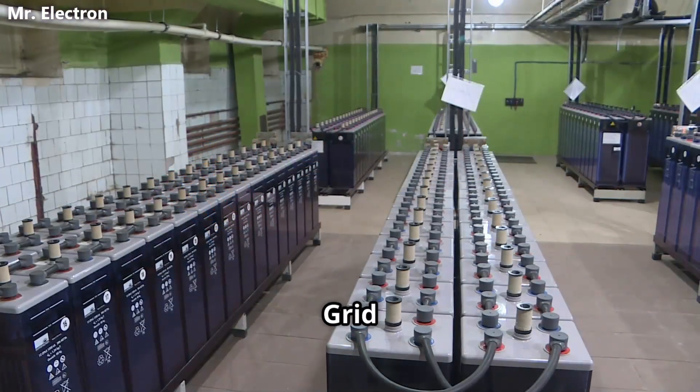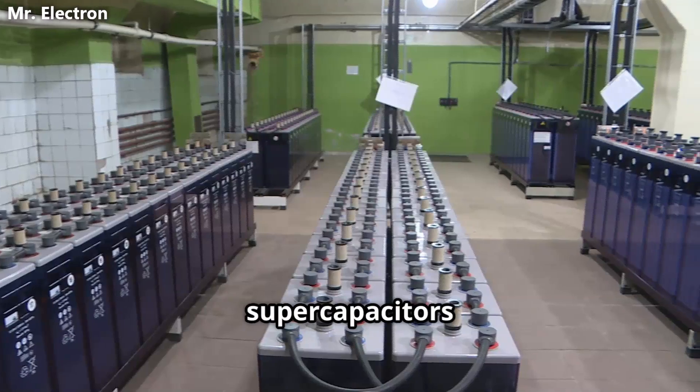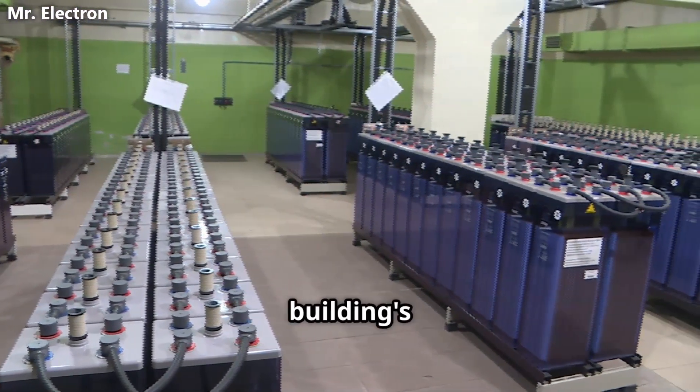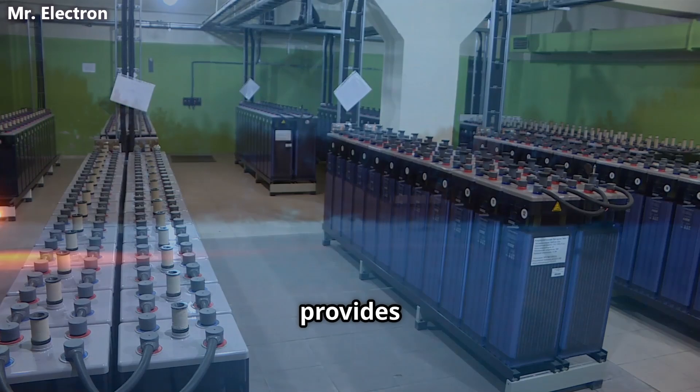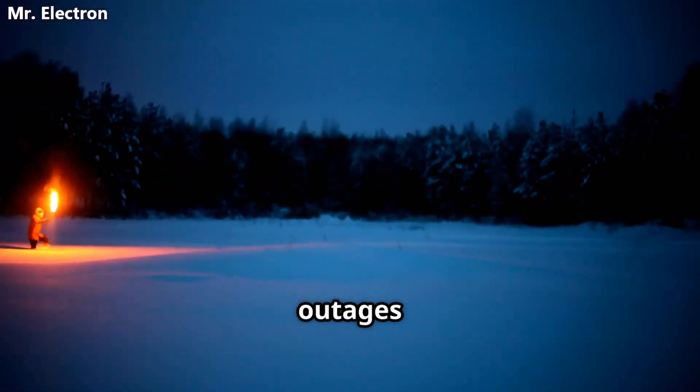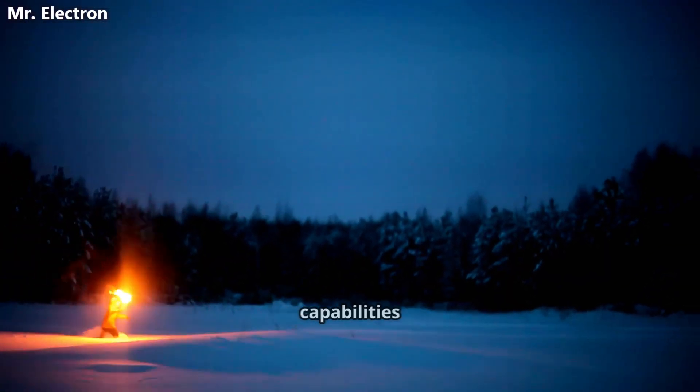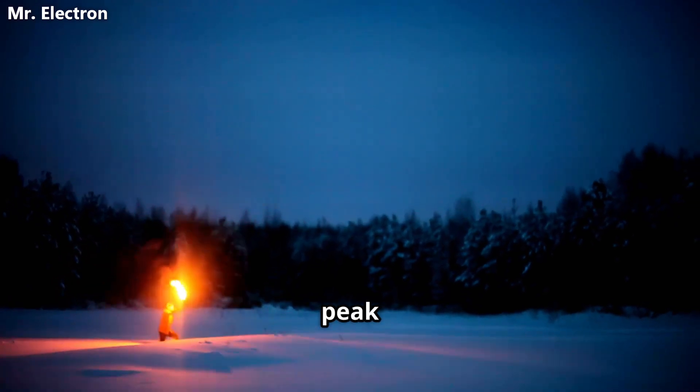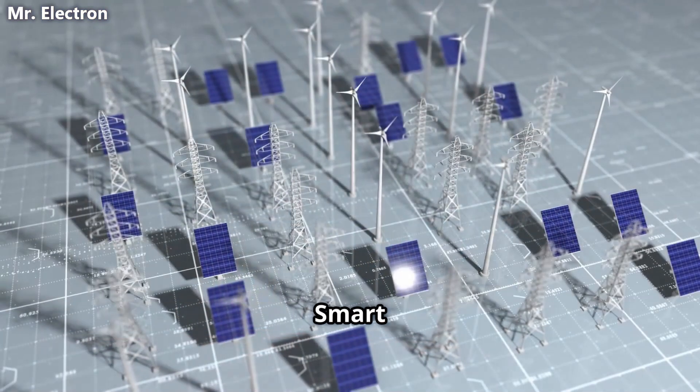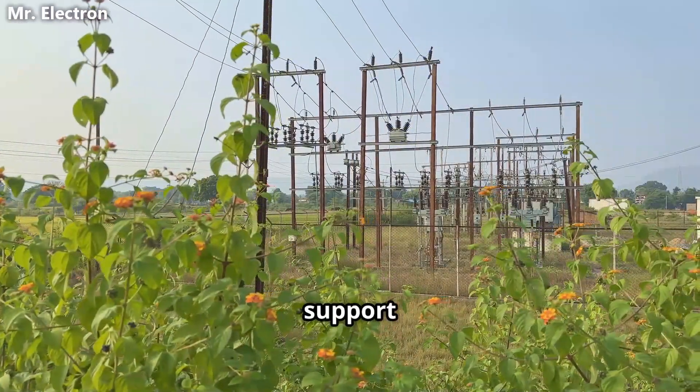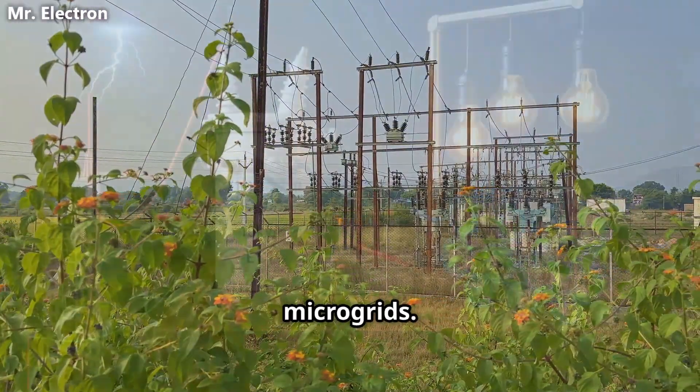For off-grid systems, lightning-charged supercapacitors feed this captured energy directly into the building's battery banks, providing critical backup power during outages and offering intelligent load-shifting capabilities during peak demand periods. Smart grid integration allows this lightning-harvested energy to support entire neighborhood microgrids.